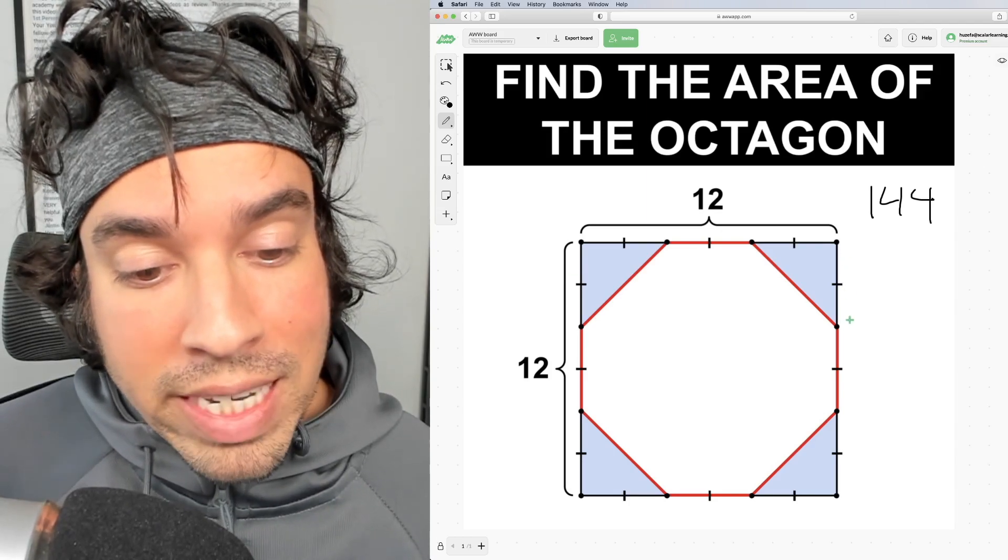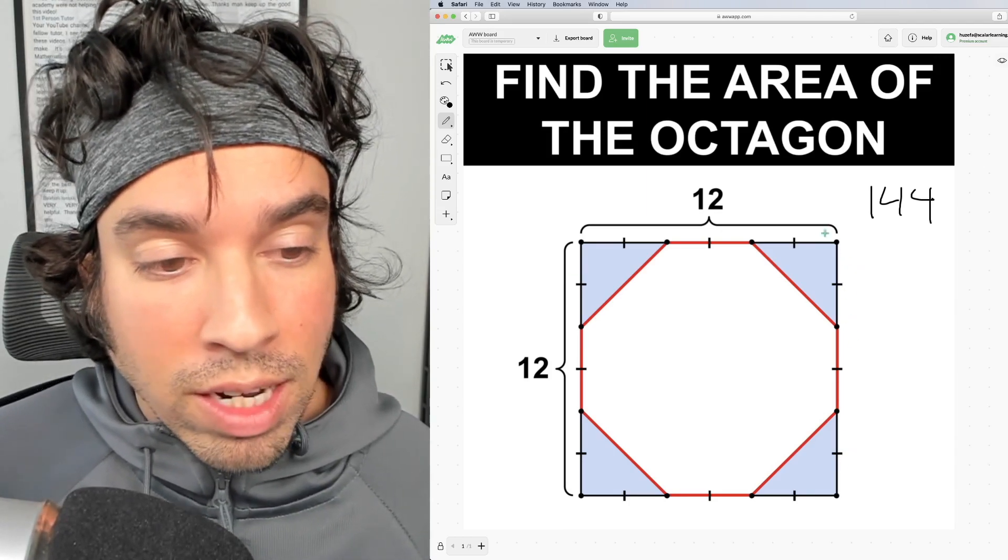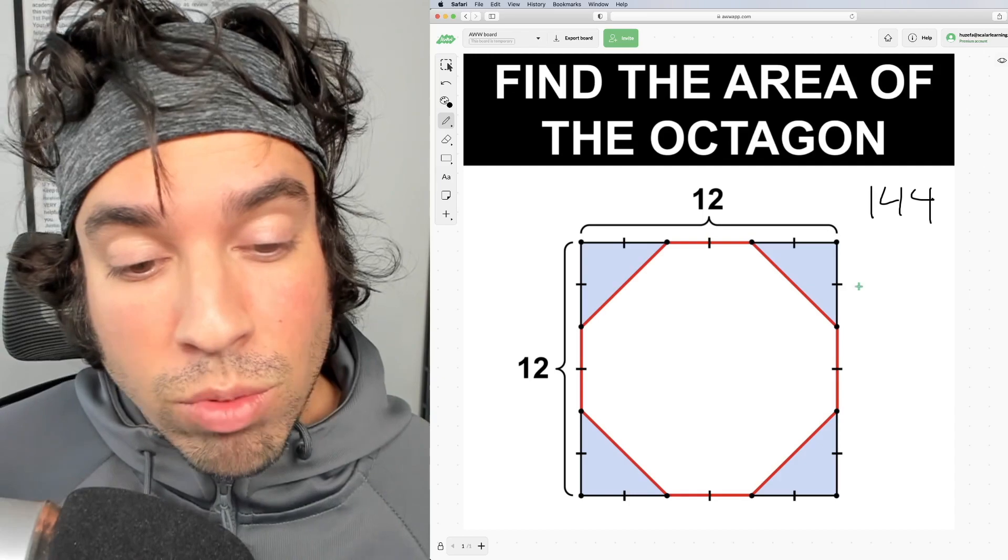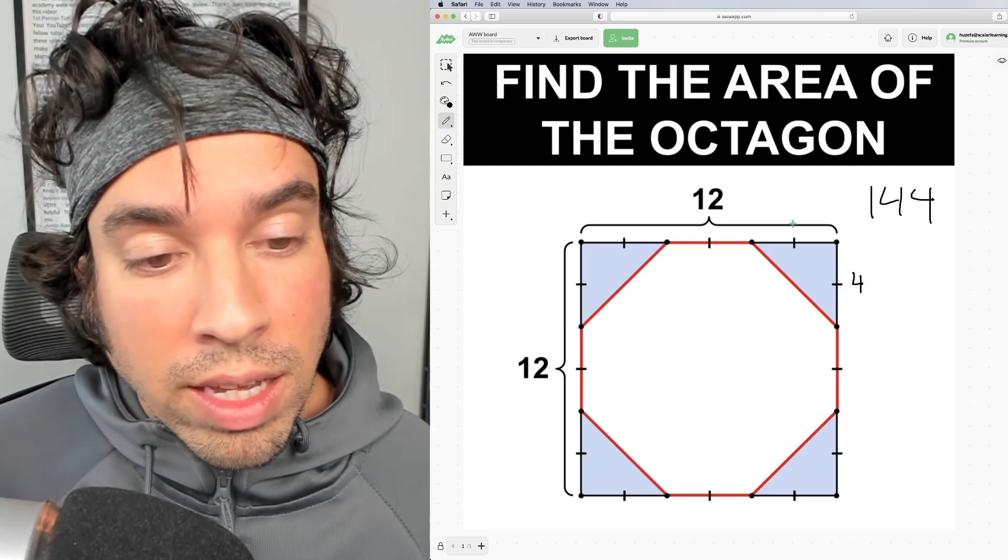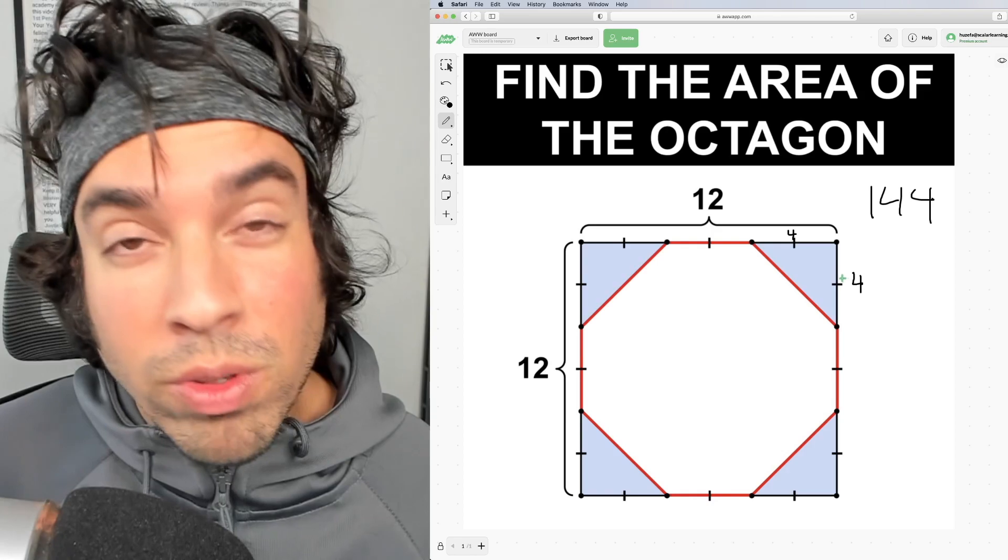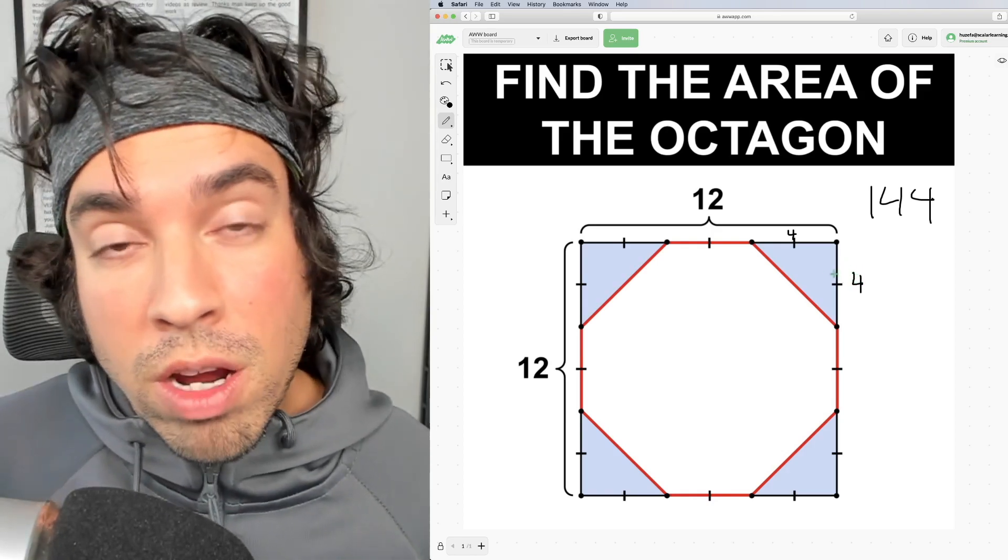Well, if these are all equal segments and it's divided into three equal segments, the length of this side here is four and the length of this side up here is four. So what is the area of this triangle?